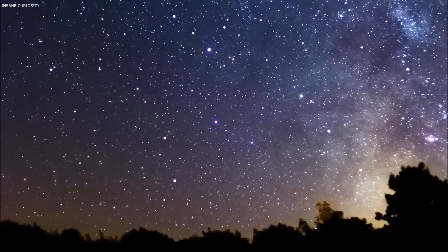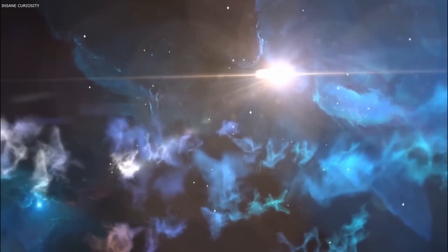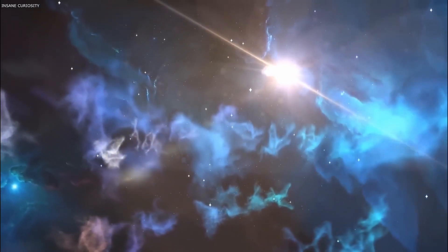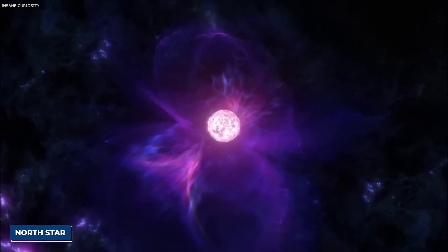Situated 323 light-years away, any event on Polaris would take centuries to reach Earth. Its historical significance spans civilizations, aiding navigation and symbolizing constancy.